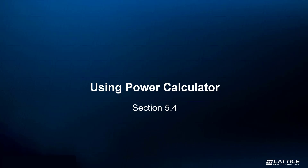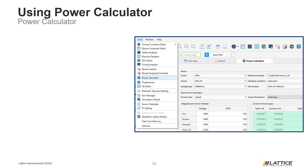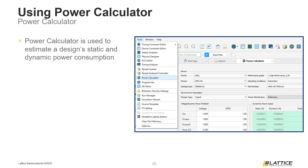In this section of the video series, we will be discussing Radiant's Power Calculator and how it can be used to check if a design is meeting its power design requirements. Radiant's Power Calculator is a tool that can be used to estimate the static and dynamic power consumption of a design to ensure that it is meeting its design power requirements.